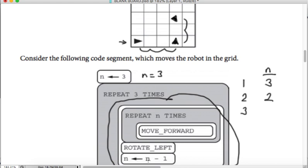At the end of the second iteration, n becomes n minus 1, which is 2 minus 1, equals 1. So repeat one time: move forward once and then rotate left. This is the final position.